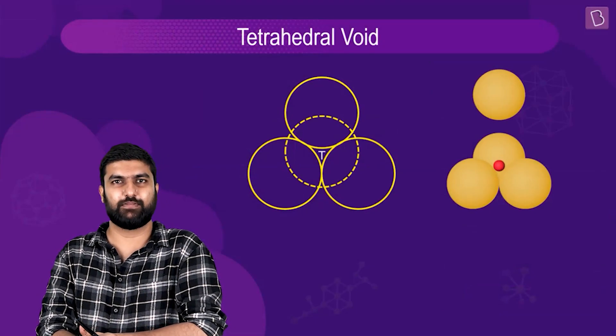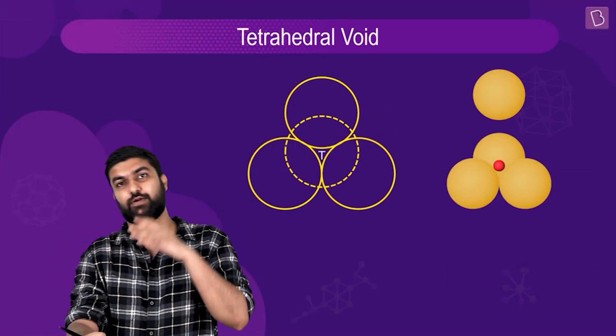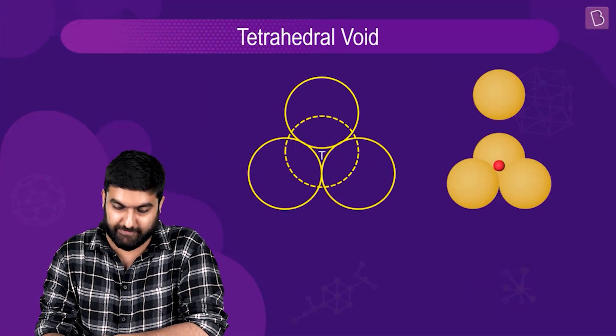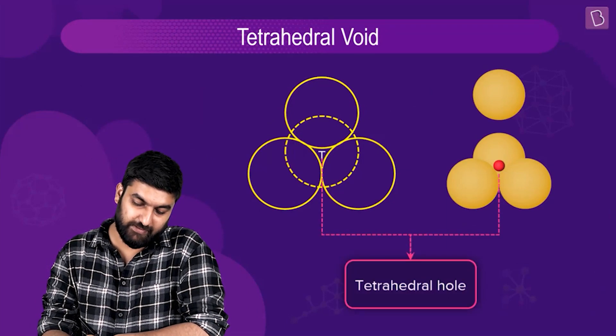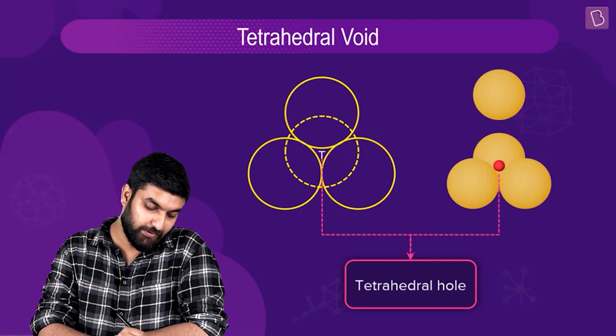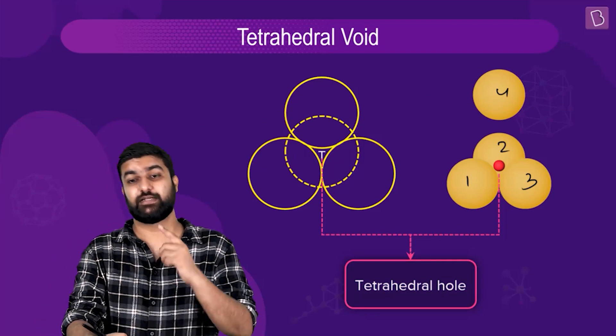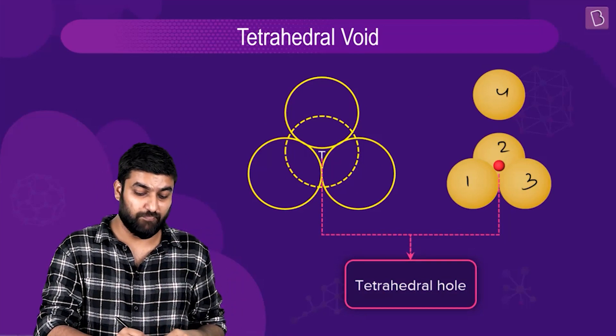In the tetrahedral void, we have something like this. So what essentially becomes important is if you name these as one, two, three, and four, you realize that not only are one, two, and three in contact with each other, but also...